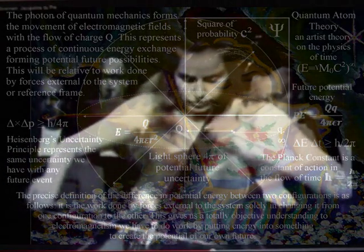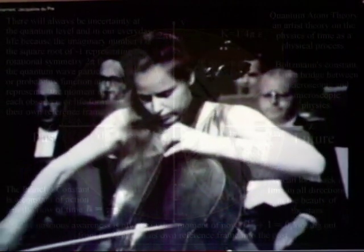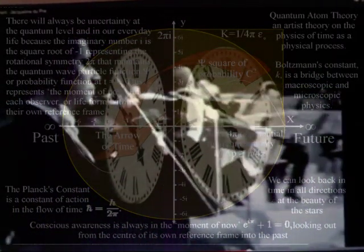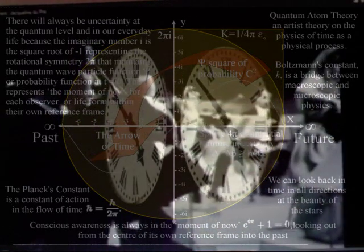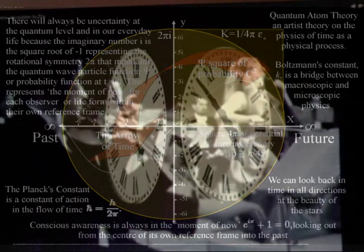Everything forms its own future space-time by slowing up the rate that time flows. This is called time dilation and is relative to our own energy and momentum. This can be seen mathematically because multiplying by the imaginary number i forms a rotation in space and time, forming the curvature of space-time.